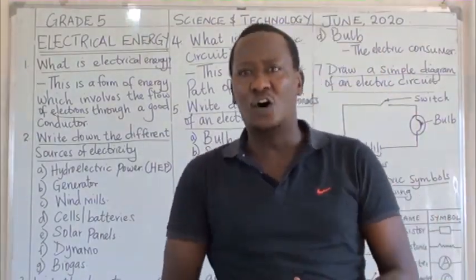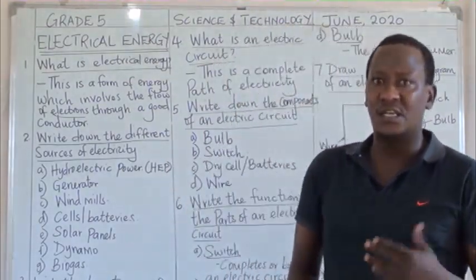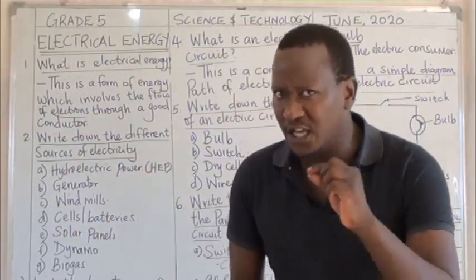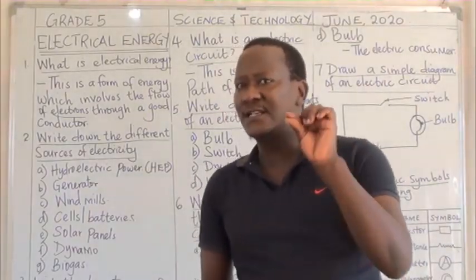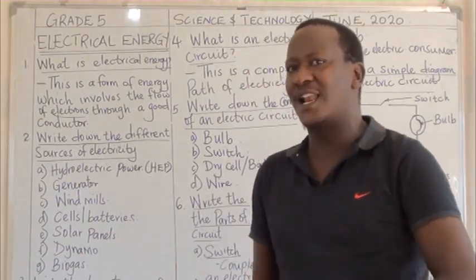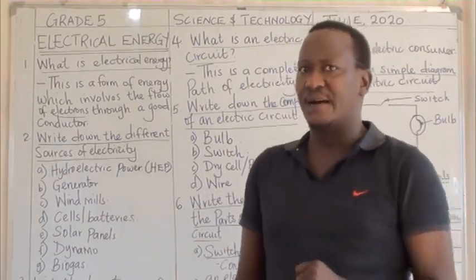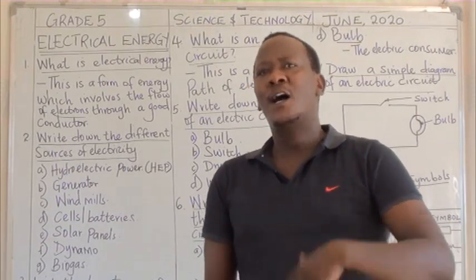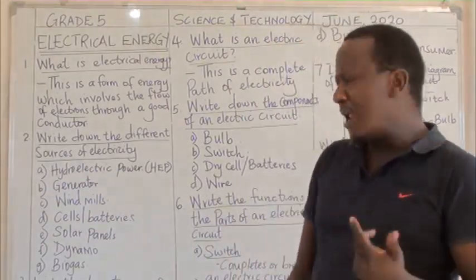All those things allow the flow of electricity. But the opposite of good conductors of electricity is bad conductors of electricity, which are also known as insulators. An insulator is a bad conductor — things which do not allow the flow of electricity or the flow of electrons. For example, we have plastic, a piece of cloth, paper, dry wood, and many more.